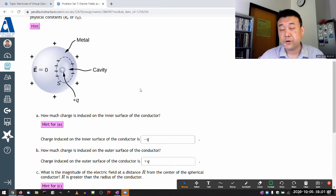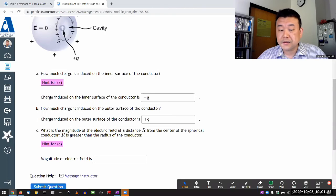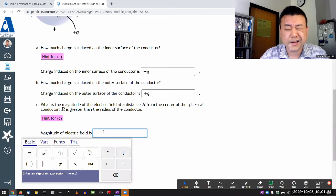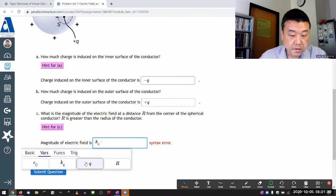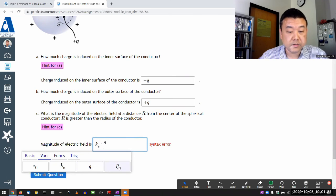So when you are out here at distance r, this spherical shell of positive charge will look like a point charge at the center of the sphere, ignoring the cavity. So that's what the expression is going to be. Magnitude of electric field is the Coulomb constant times the charge divided by the distance squared.